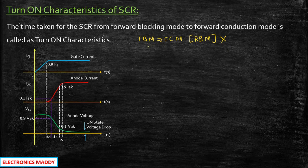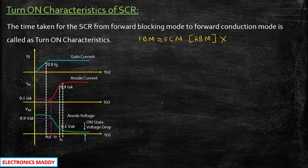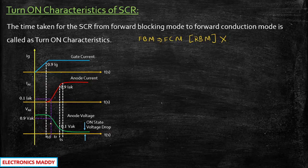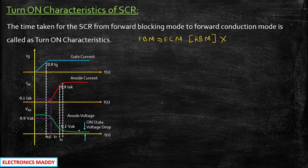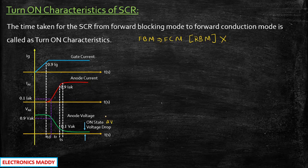If you carefully observe the characteristics, this is the gate current that is applied. After 90% of the gate current is supplied — you're applying gate voltage and the gate current starts increasing slowly — the anode current through the SCR will start increasing. So the current starts increasing and the voltage starts decreasing. The voltage was very high until the 90% IG point, and from that point the current increases while the voltage decreases, finally reaching the on-state voltage drop. The anode current becomes saturated and constant beyond a certain value.